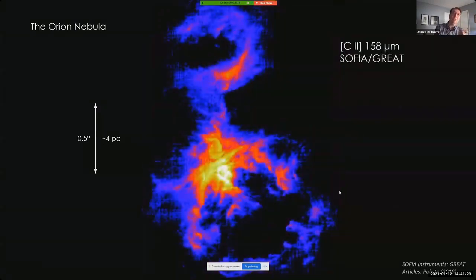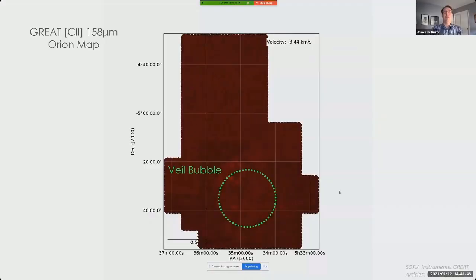And while the optical image, the Spitzer dust image, and these GREAT gas images reveal similar looking structures, the biggest advantage of the SOFIA data taken by GREAT is that it is taken in a way that also captures information about the velocity of the gas observed. And so here's an animation of the C+ gas emission in Orion, made by stepping through images that are generated at increasing gas velocities along this line of sight to Orion.